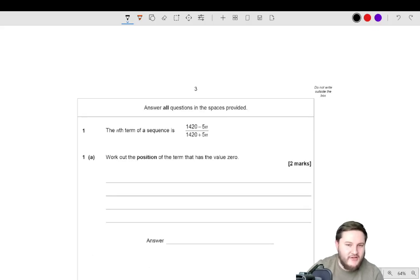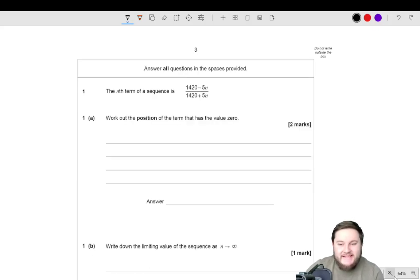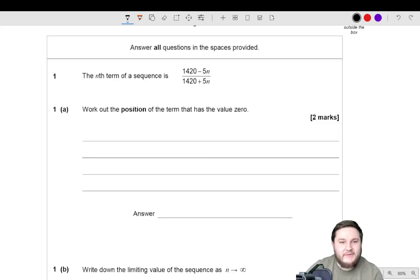Oh, yeah, the formula sheet first, then question 1. So let me, I'm going to zoom in a little bit just so that we can see these questions a bit better. There we go. So the nth term of a sequence is 1420 - 5n over 1420 + 5n. Work out the position of the nth term that has a value of 0.